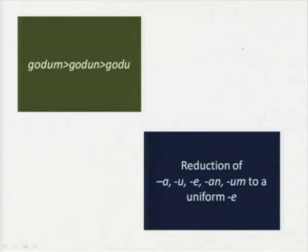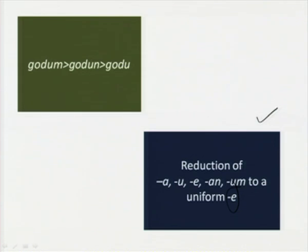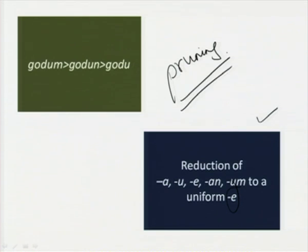As a result of the loss of the inflectional system, prepositions become very important, word order becomes important, there is a replacement of grammatical gender with natural gender, strong verbs become regularized, and the strong/weak adjective distinction disappears. There was a reduction of endings 'a', 'u', 'e' and 'um' to a uniform 'e'. It is perhaps from this Middle English period that the characteristic simplicity of English — what we might call the pruning of the inflectional endings — becomes established. This is one of the most important characteristics of change from Old English to Middle English.